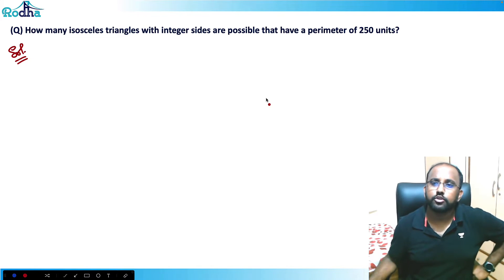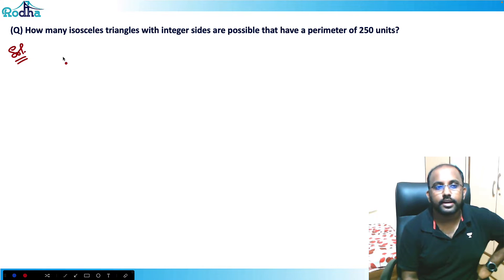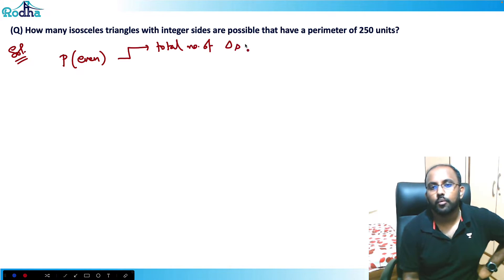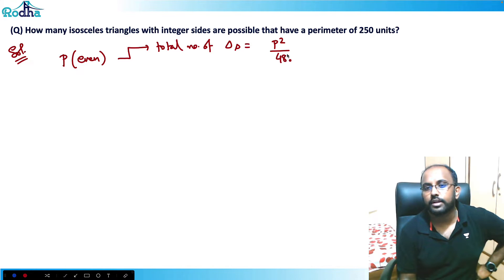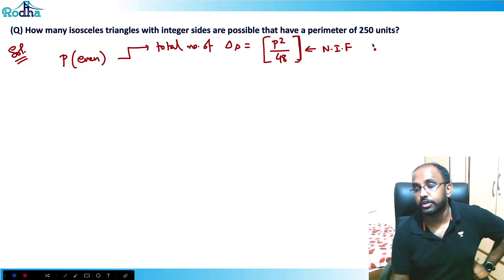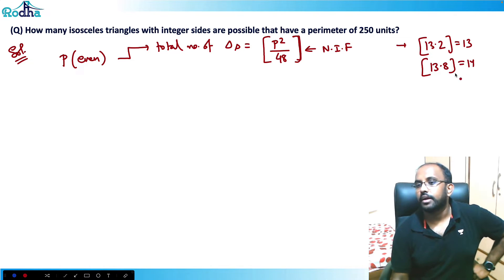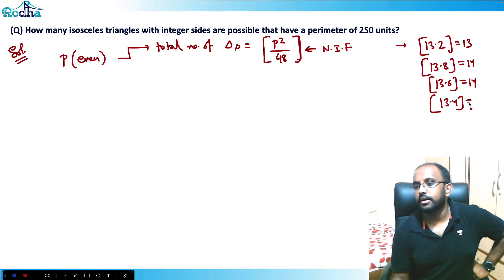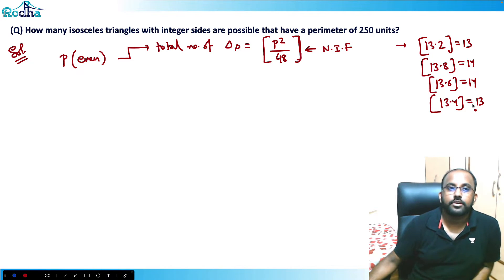The formula goes like this: whenever the perimeter is even, the total number of triangles is equal to ⌊p²/48⌋, where this bracket denotes the nearest integer function. The nearest integer function means if the value is 13.2 it becomes 13, if it's 13.6 or 13.8 it becomes 14, and if it's 13.4 it stays 13.